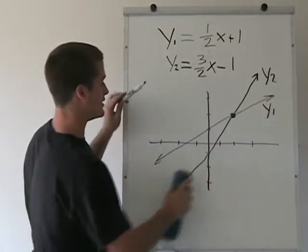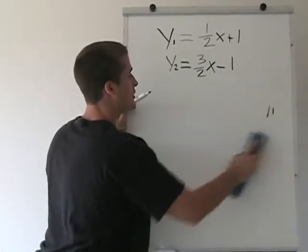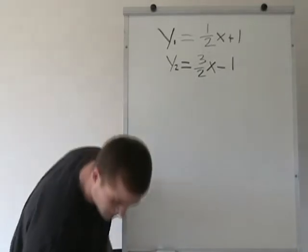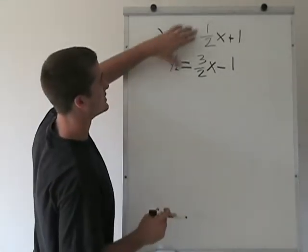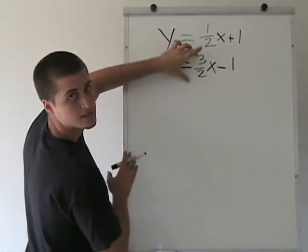So the way to get that is to set both of the equations equal to each other. So we're going to take this part of the equation, the actual function, and set it equal to this part of this equation.